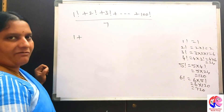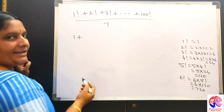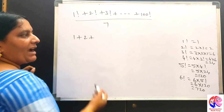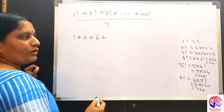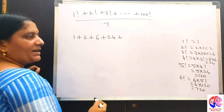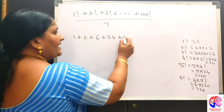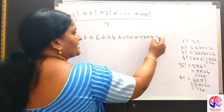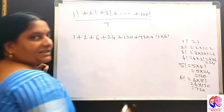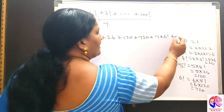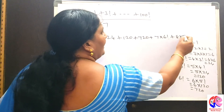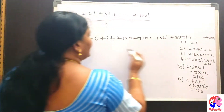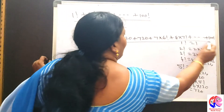The remaining factorials we need not find. The sum can be written as: 1 plus 2 plus 6 plus 24 plus 120 plus 720 plus 7 factorial, which is 7 into 6 factorial, plus 8 factorial, which is 8 into 7 factorial, plus so on, plus 100 factorial, all divided by 7.